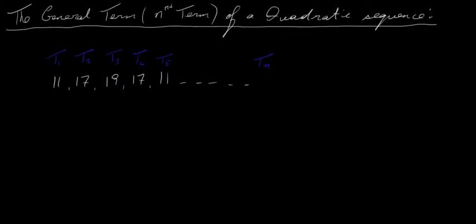In this video I'm going to look at what's called the general term or nth term of a quadratic sequence. I'm going to look at a non-contextual type of question — just a sequence of numbers with no story involved, and find the general term or formula that will allow me to find any particular term in the sequence.